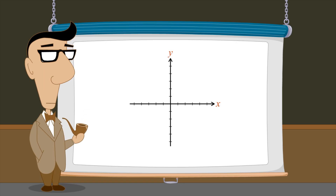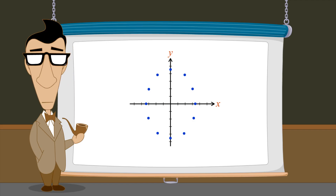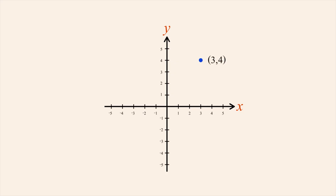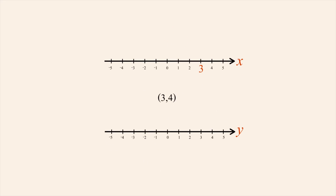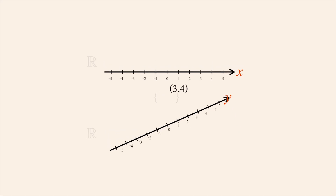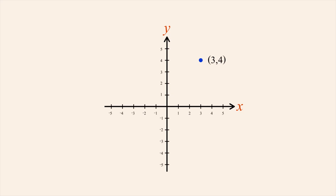In the beginning of this lecture we showed a group of points in the xy-plane and said that this is an example of a binary relation. So what are the two sets in this binary relation and how are they related? As we saw, a point on the xy-plane is a visual representation of an ordered pair of real numbers, where the first element corresponds to a number on the x-axis and the second element corresponds to a number on the y-axis. So the ordered pair relates one member of the set of real numbers represented by the x-axis to one member of the set of real numbers represented by the y-axis. A set consisting of this ordered pair would thus be a binary relation from one set of real numbers to the other, and the corresponding point on the xy-plane is a visual representation of this relation.